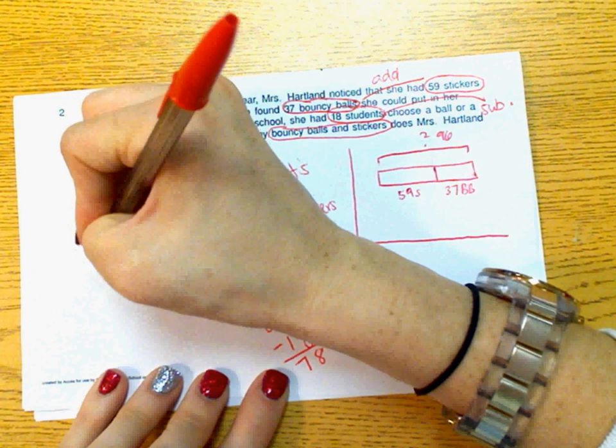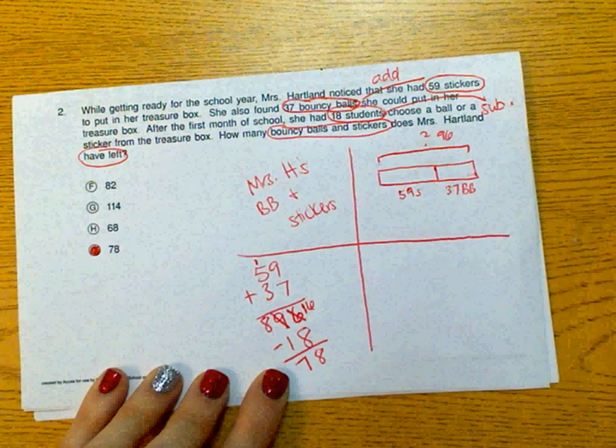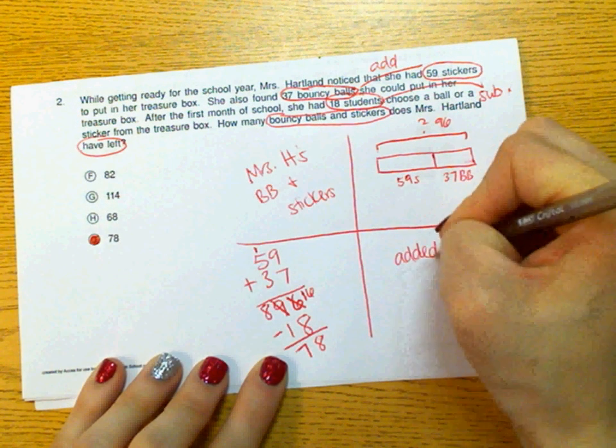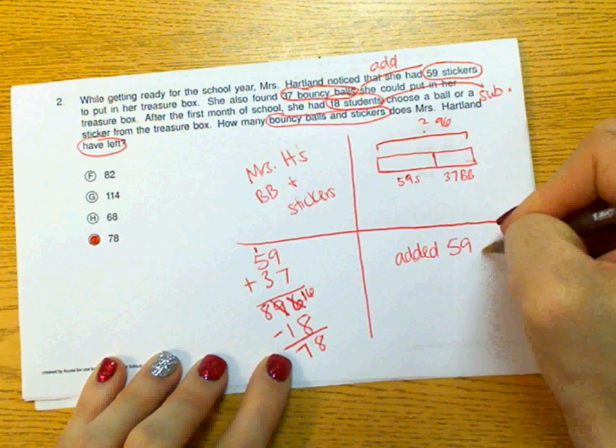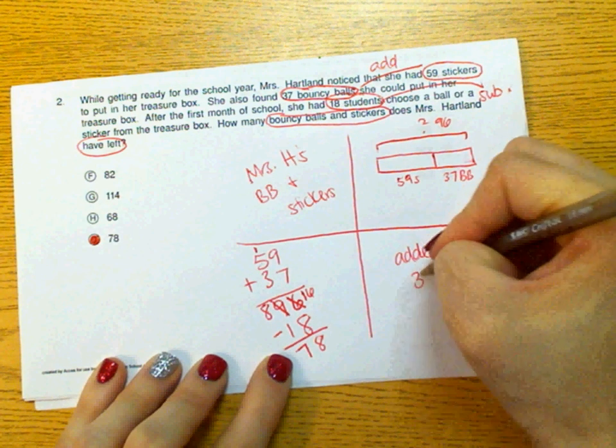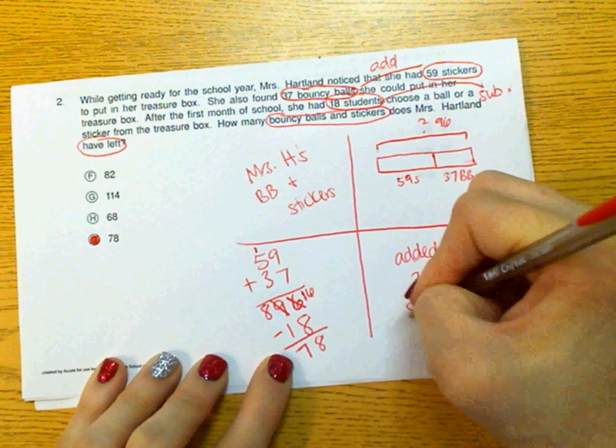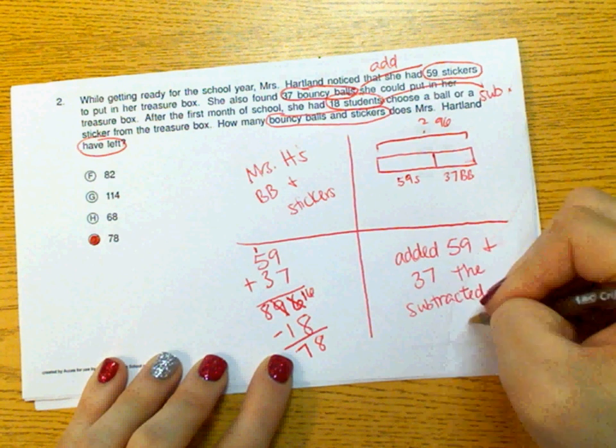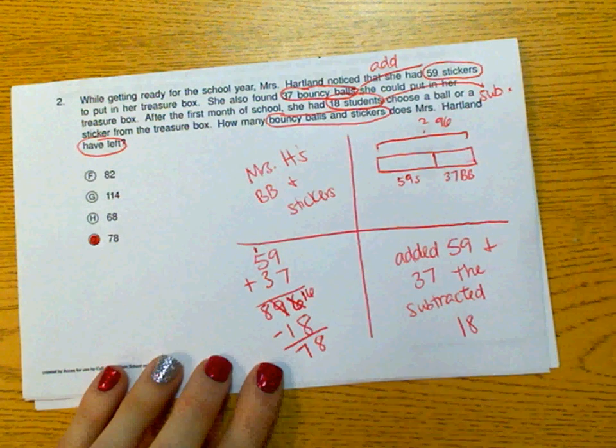We want to know how we got that answer. And we added 59 and 37, then subtracted 18. And that's how you would solve that problem.